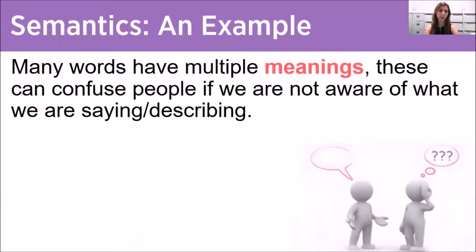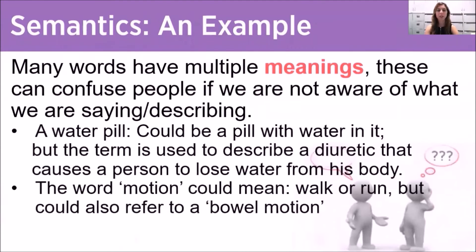Focusing on semantics specifically, many words have multiple meanings, which can confuse people if we are not aware of what we are saying or describing. For example, a water pill could be interpreted as a pill with water in it, but the term is actually used to describe a diuretic that causes a person to lose water from their body. Similarly, the word motion could mean to walk or run, but it could also refer to a bowel motion. This is why it is important to be specific when discussing these types of items with your clients or patients.